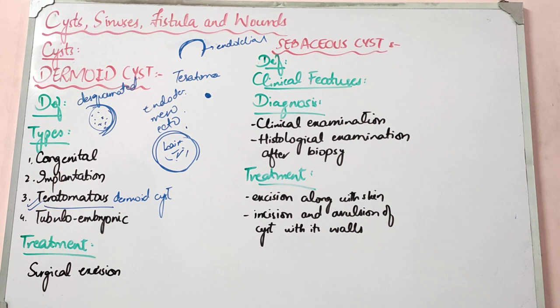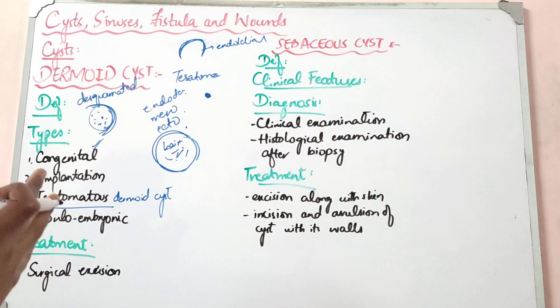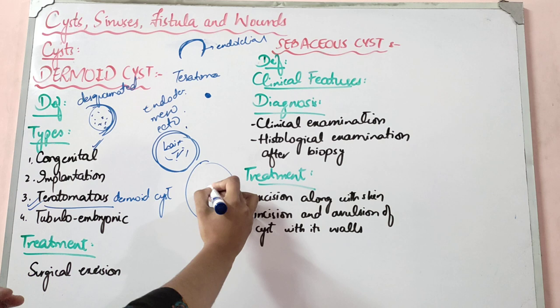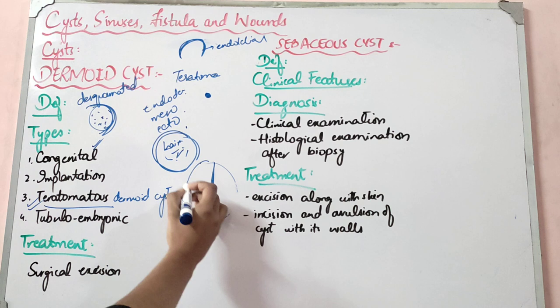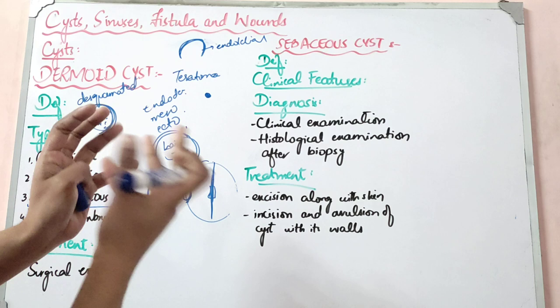Desquamated cells can produce paste-like contents including sebum, sweat gland secretions, and desquamated cells of any type. Congenital dermoids form along special lines — when embryonic tissue fuses during development. There are embryonic fusion planes, such as in the midline, for example the child's skull bone, and at other sites where structures fuse during embryogenesis.